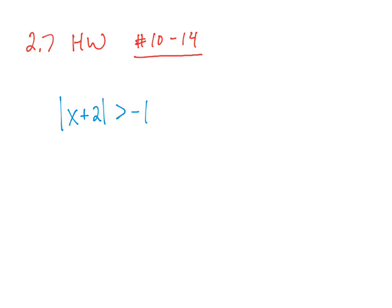The first one, number 10 in the homework, says absolute value of x plus 2 is greater than negative 1. If we recall, any time we have an absolute value expression, that is going to equal either 0 or some positive value. Because this says absolute value of x plus 2 is greater than a negative number, any x value we substitute in is going to make this inequality true.